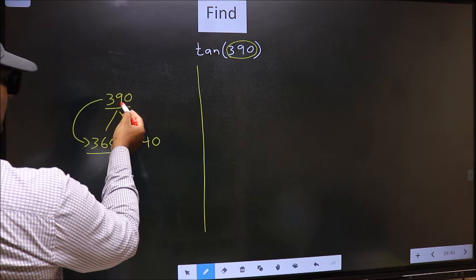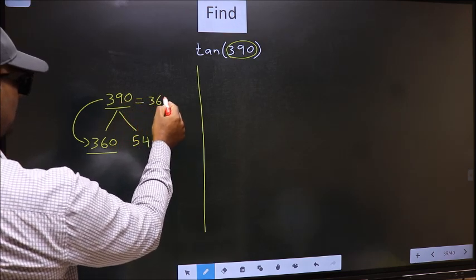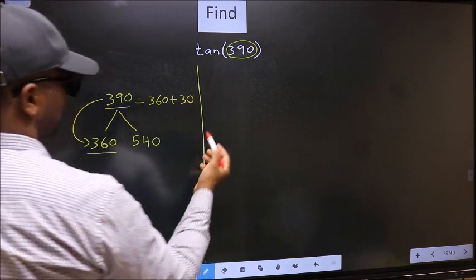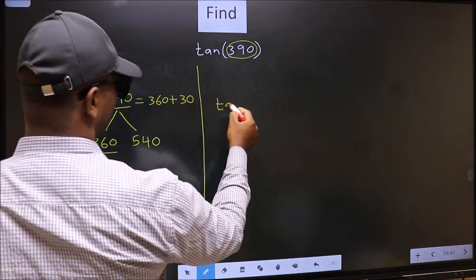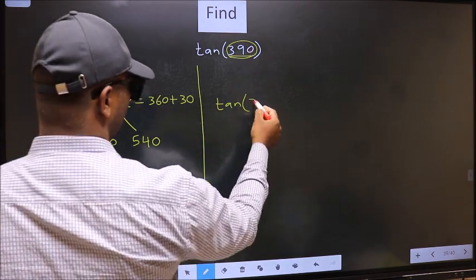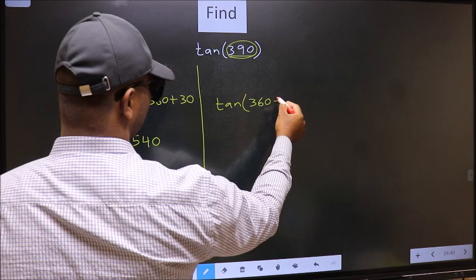So in place of 390 now we should write 360 plus 30. So this will become tan, in place of this now we write 360 plus 30.